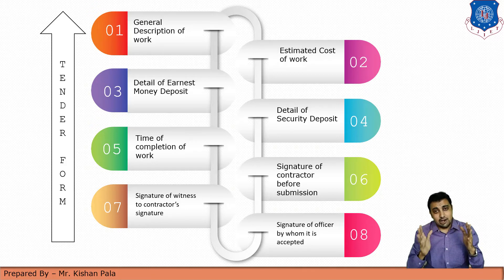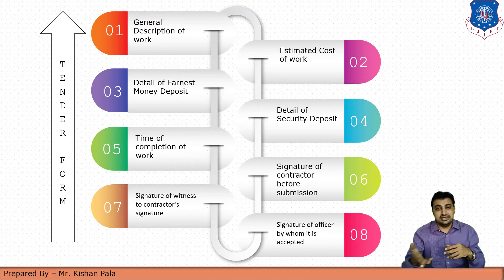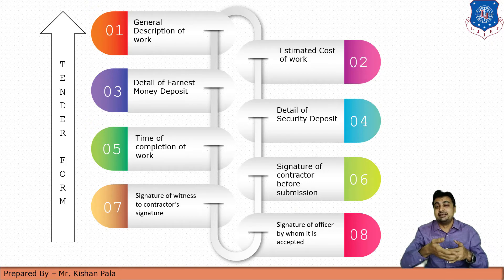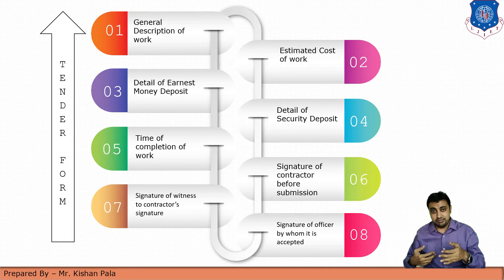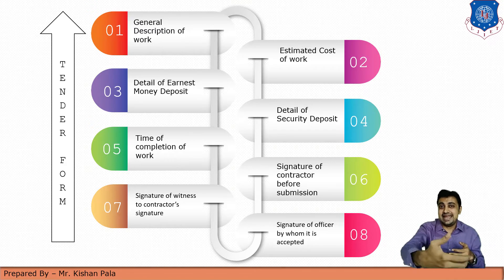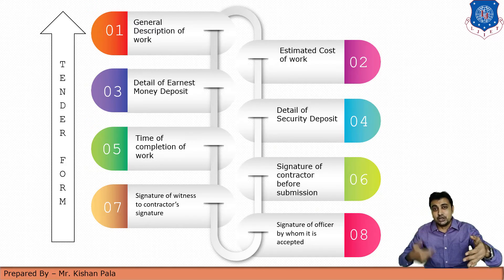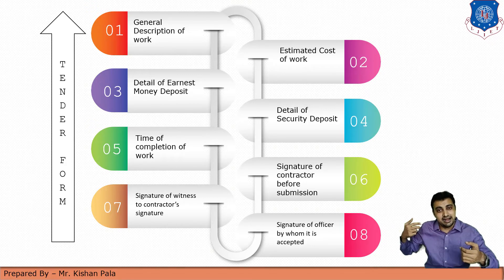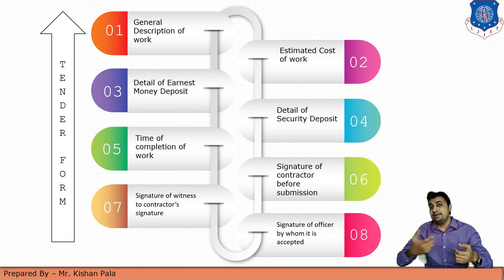Next is time of completion of work — how much time for the particular type of construction work, like six months, three years, or six years, depending upon the type of the project. There should also be mentioned the signature of the contractor before submission, because this is the authorized person who is going through the tendering process, and his signature is required as he has participated in the bidding process.